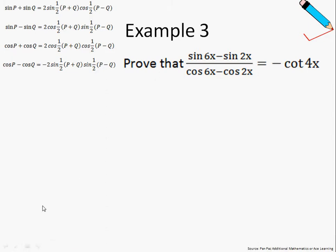What we're going to do first is apply the factor formula, which is being highlighted in yellow now, on the numerator. So first, let us identify our parameters. So in this case, our P is 6x and our Q is 2x.